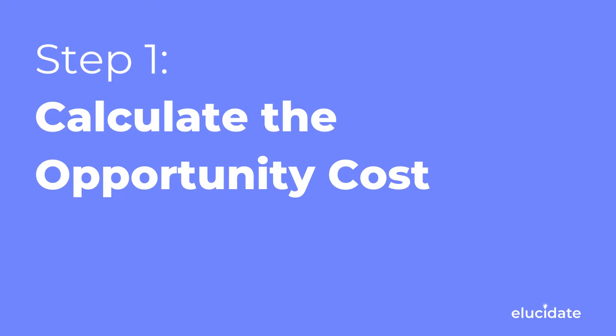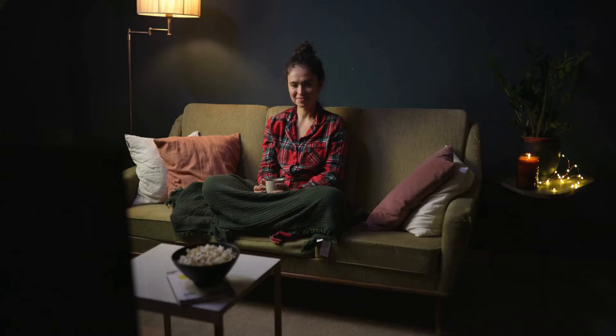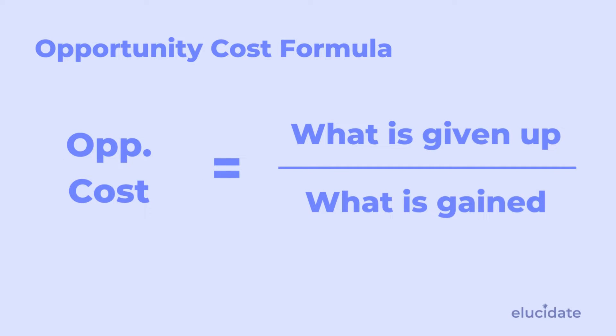Step one: calculate the opportunity costs. The theory of opportunity costs states that if I produce one thing, I can't produce another. In other words, if I produce wheat, I can't produce a certain amount of rice. You can also apply this beyond economics — for example, if I buy a PlayStation, I can't buy an Xbox. Or in your personal life, if I go for a jog, I can't watch Netflix. Both equally important, of course. The formula for opportunity cost is simply what you lose over what you gain.